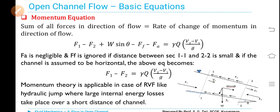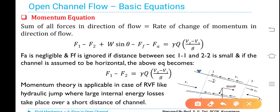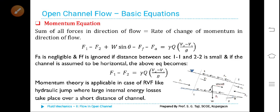FA is negligible and FF is ignored if the distance between sections 1-1 and 2-2 is very small. If the channel is assumed to be horizontal, theta equals 0, and the equation becomes: F1 minus F2 = γQ(V2 − V1)/g. Momentum theory is applicable in cases of rapidly varied flow like hydraulic jump, where large internal energy losses take place over a short distance of channel.